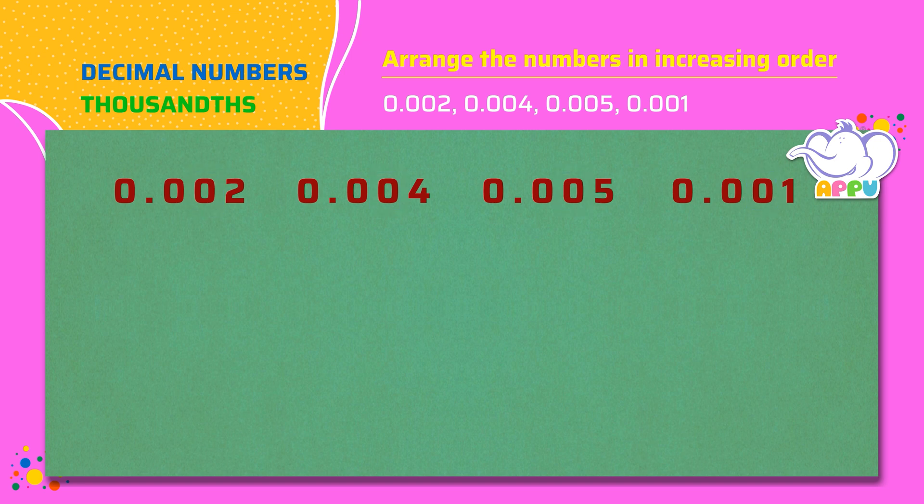We compare the thousands place. We have 2, 4, 5 and 1. We arrange these in increasing order.